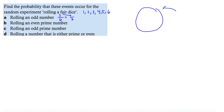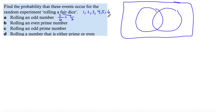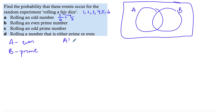So I'll create a Venn diagram. Notice that the options involve odd numbers, even numbers, and prime numbers, so I'm going to split them into two sets. I'll call my set A the even numbers and set B the prime numbers. Everything not in A will be my odd numbers, and everything not in B will be the non-prime, or composite, numbers.